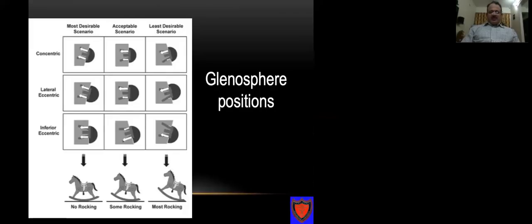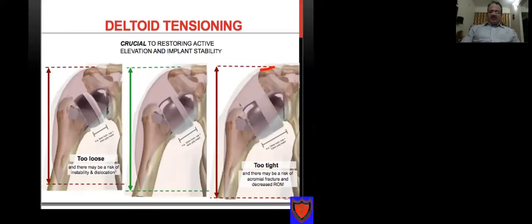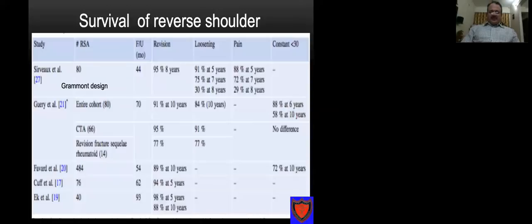Glenosphere positioning is also important — it should be placed to minimize rocking, otherwise there would be glenoid loosening. Proper tension in the reverse shoulder is important and comes with experience. It should be a little hard to reduce and a little hard to dislocate — not too loose, not too tight. The learning curve for reverse shoulder may be the first 20 to 40 cases. If the deltoid is too loose, there is risk of instability and dislocation; if too tight, there is risk of acromial fracture and decreased range of movement.